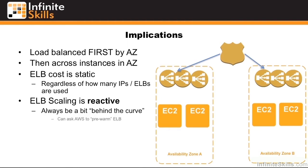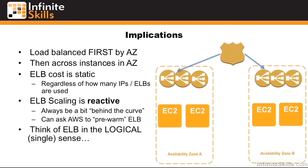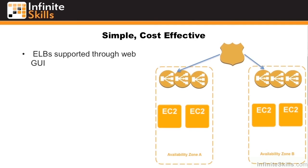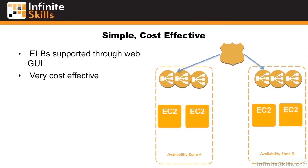If you know that you're going to have a big email drop on a certain day at a certain time, you can call Amazon and ask them to pre-warm the ELBs for the amount of traffic you expect to receive. Always think of ELBs in the logical sense of a single ELB balancing across many EC2 instances. ELBs are supported through the web GUI and are very cost effective — typically 5 to 10 times cheaper than rolling your own with EC2.